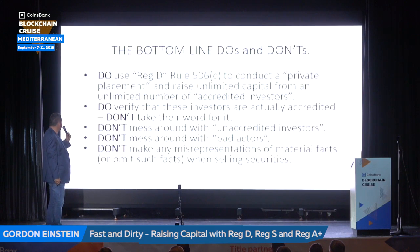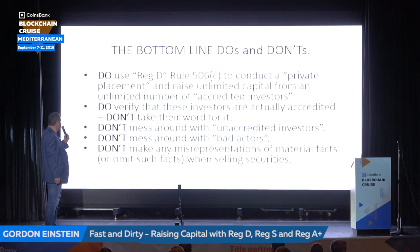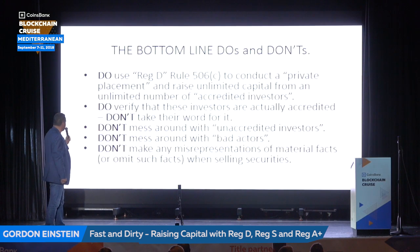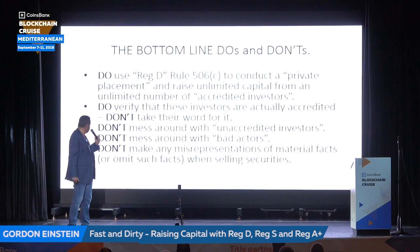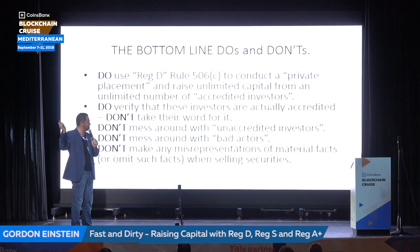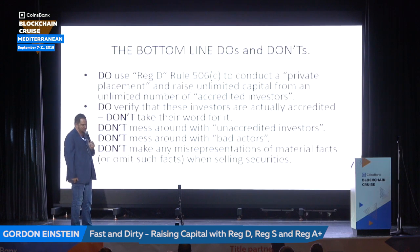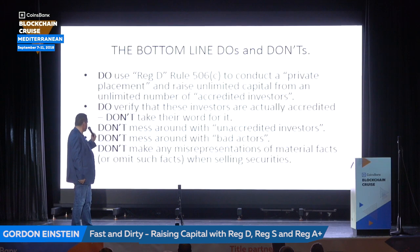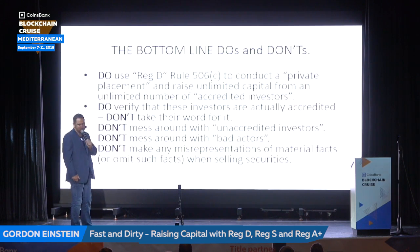Do use Reg D, specifically Rule 506C, to conduct a private placement of securities and raise unlimited capital. There's no cap on the amount you can raise from an unlimited number of accredited investors. You can use Reg D in the United States, Rule 506C, to conduct a private placement to raise unlimited capital from an unlimited number of accredited investors. You should verify that these investors are actually accredited investors — do not take their word for it. Don't mess around with unaccredited investors. Number one, it will blow your ability to raise all this money. Number two, they don't have any money — why bother?